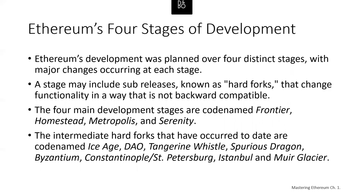Ethereum's development was planned over several stages with major changes occurring at each stage. The main development stages were codenamed Frontier, Homestead, Metropolis, and Serenity. There have also been a number of intermediate hard forks including Ice Age, DAO, Tangerine Whistle, Spurious Dragon, Byzantium, Constantinople, St. Petersburg, Istanbul, and Muir Glacier. Here's a look at an Ethereum timeline.